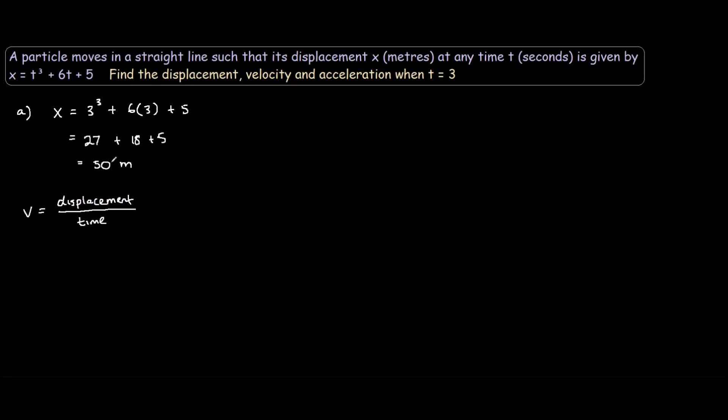So to get the velocity equation from this displacement equation, we just find the derivative. So we'll call it velocity equal to dx dt, and see how it's similar to the velocity equation.